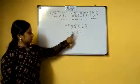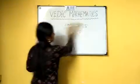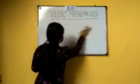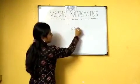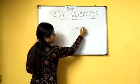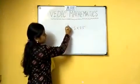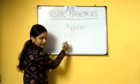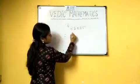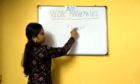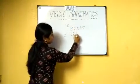Next, the example of 85 squared. One more than 8 is 9, so 9 into 8 is 72, and 5 times 5 is 25. So our answer becomes 7225.